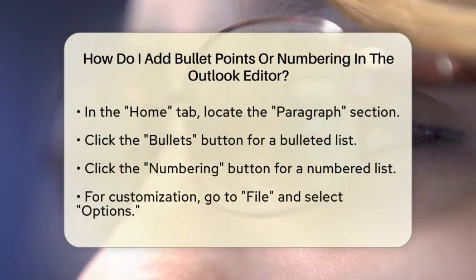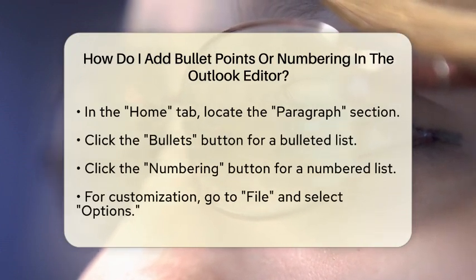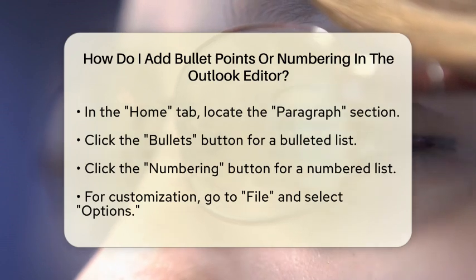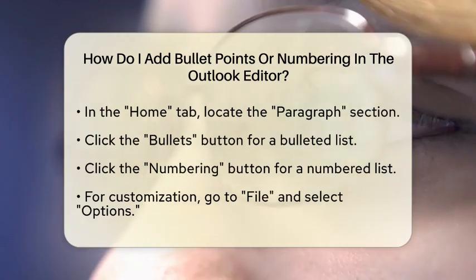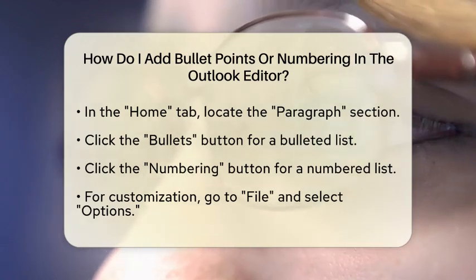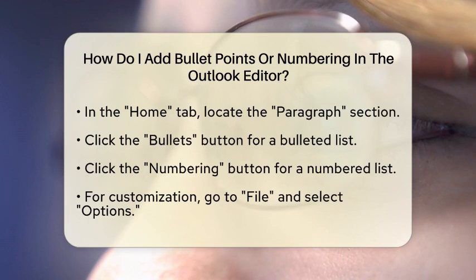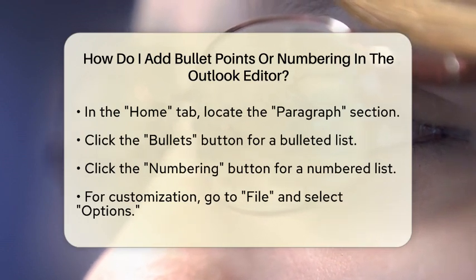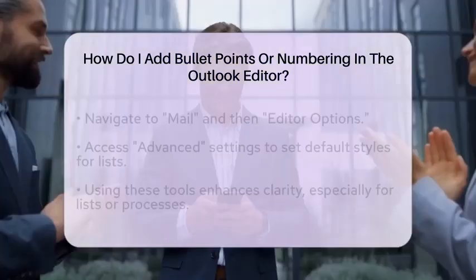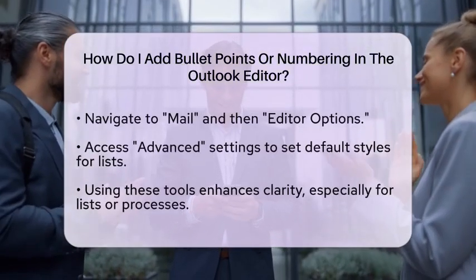Now, if you want to customize your lists even further, there are advanced options available. Go to File, then Options, and select Mail. From there, navigate to Editor Options and then Advanced. This section allows you to set default styles for your bulleted or numbered lists, which can help keep your emails looking consistent and professional.